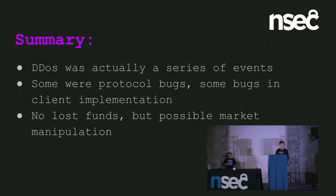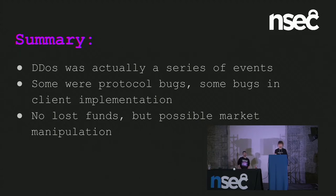In summary: the DDoS was not one event but a series of events. It revealed bugs, some in the protocol itself and some in specific client implementations. There were no lost funds. But since the attacker was spending their own money in the form of gas to execute this attack, their motivations are quite unclear. This did result in price drops, so possibly it was an attempt at market manipulation. Both their identity and motivation are unknown. In some ways, you might say they did us a favor by revealing these weaknesses in the protocol.